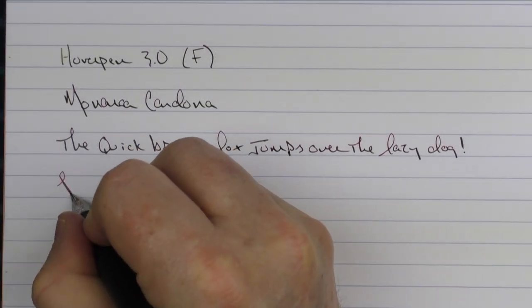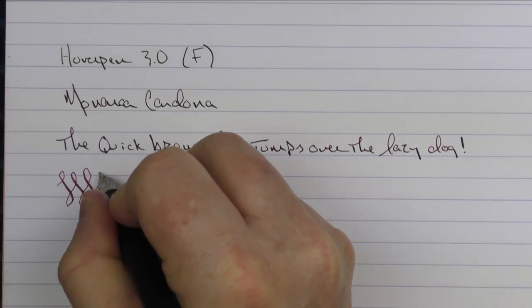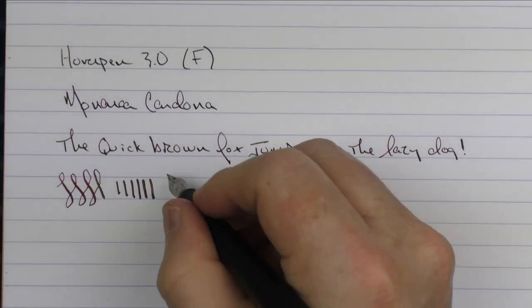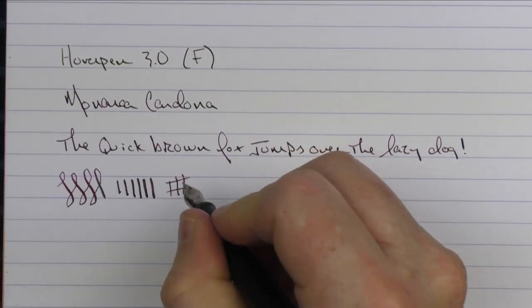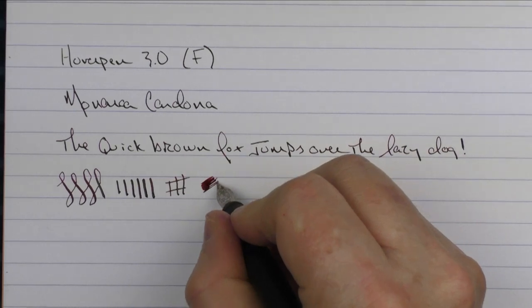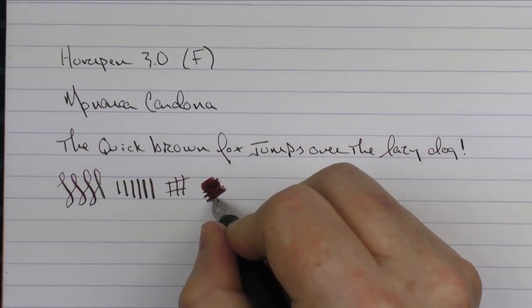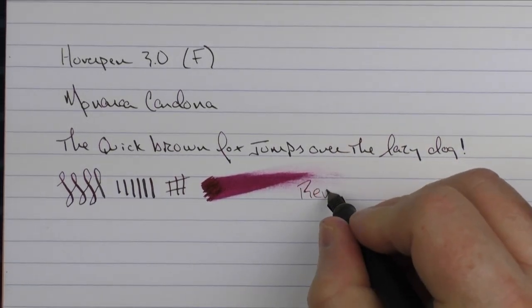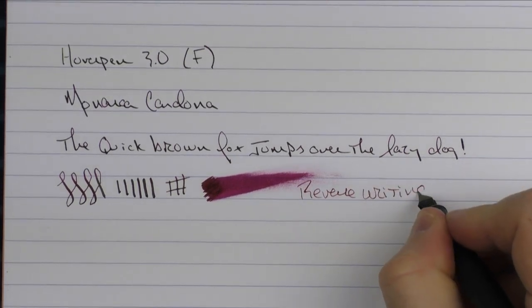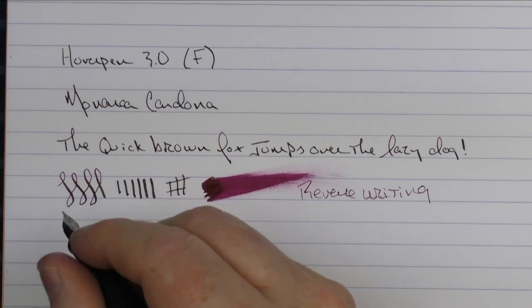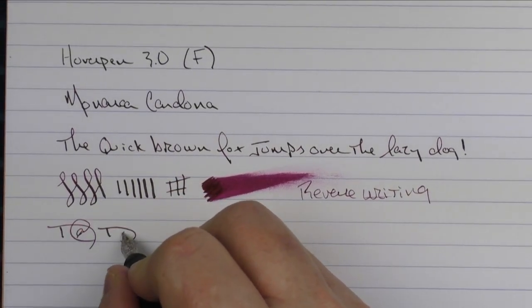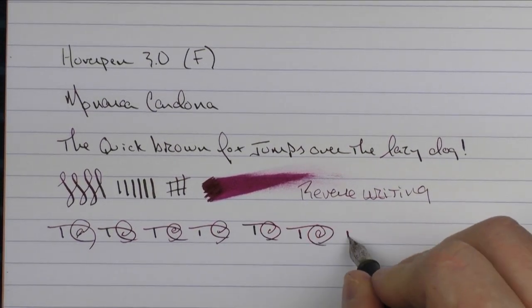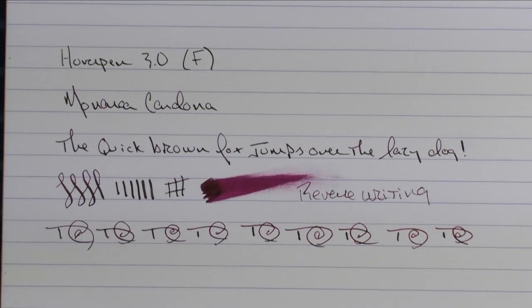I will say that this fine Schmidt nib is fairly decent. It isn't necessarily overly smooth. It does have a fair amount of feedback to it. You can get a little bit of line variation there. I wouldn't call it overly bad feedback. It just has enough that you can feel it. And it is feel more like a fine than a medium. The ink flow is very good on it. In regard to some reverse writing, it's a little sharp, but it gets the job done. In regard to some fast writing, the feed keeps up just fine.